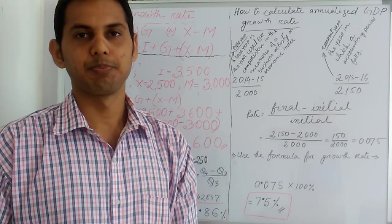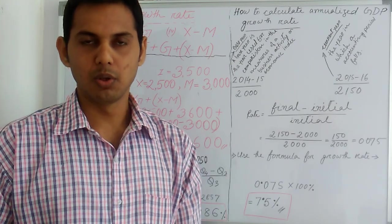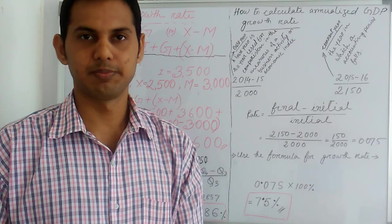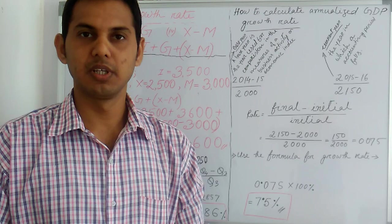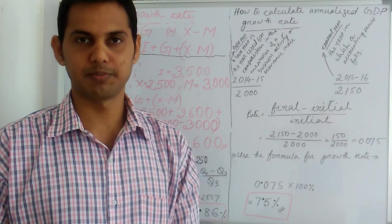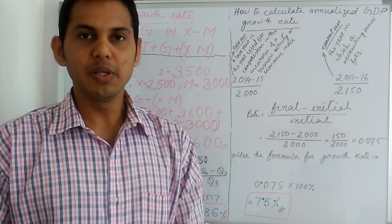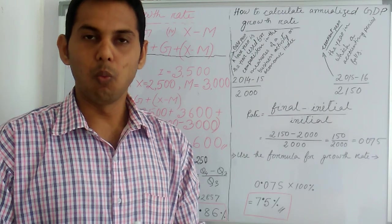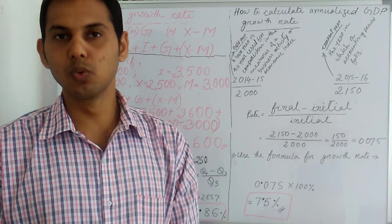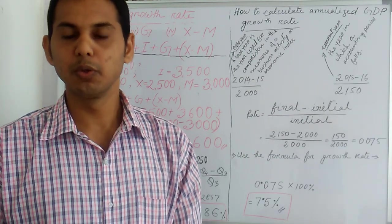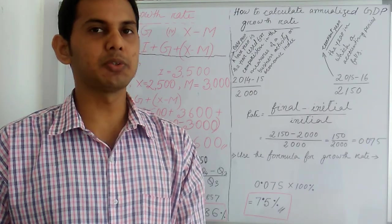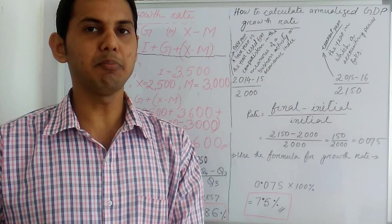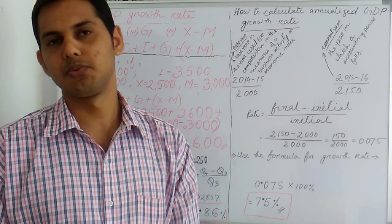So first of all, what is GDP growth rate? GDP growth rate measures how fast the economy is growing. It does this by comparing one quarter of the country's gross domestic product to the previous quarter. GDP growth rate is driven by the four components of GDP.